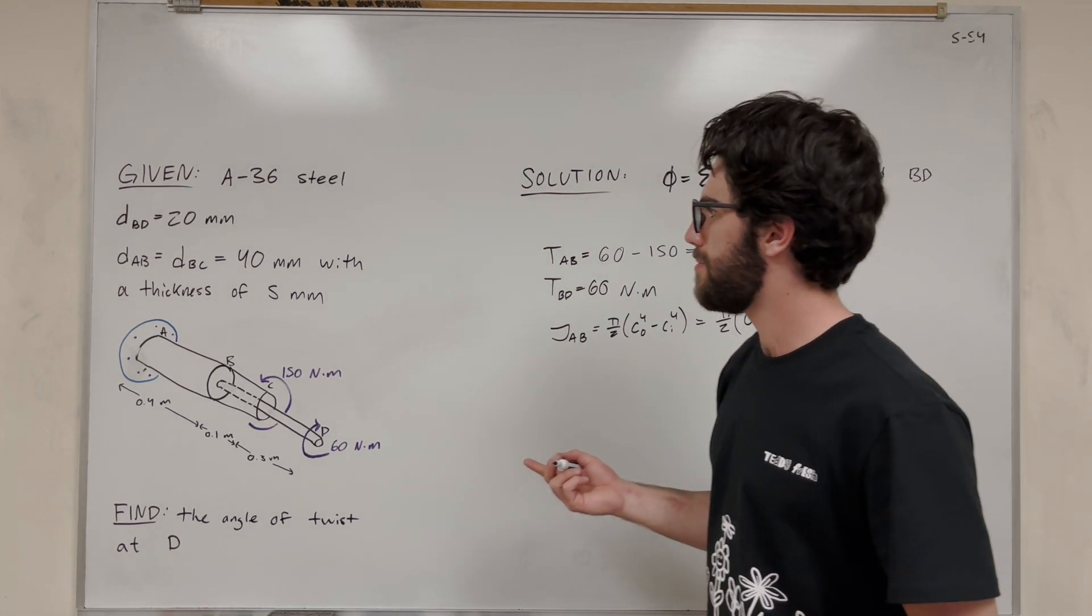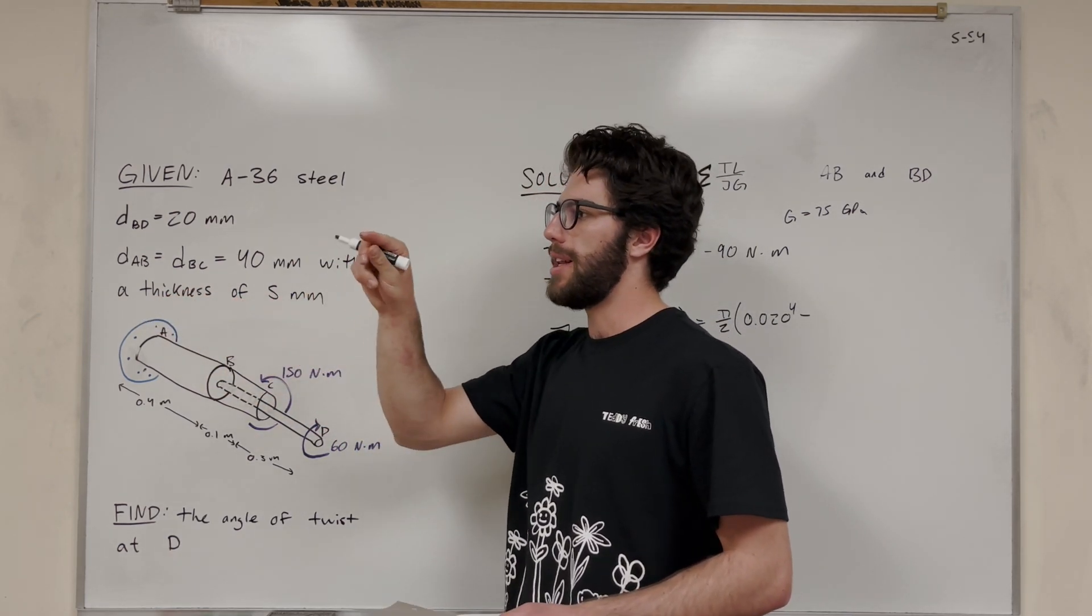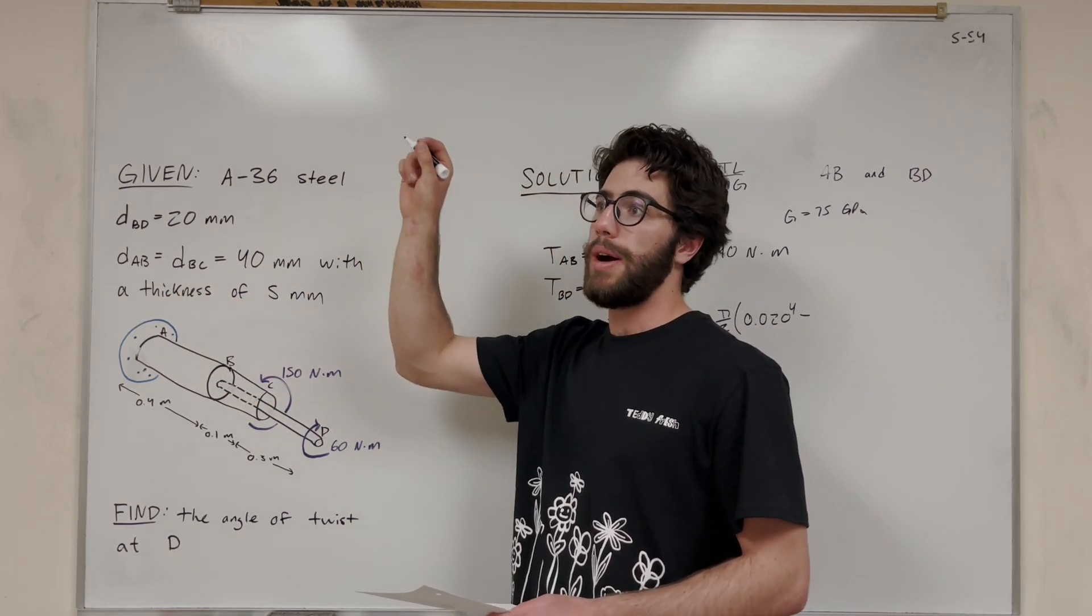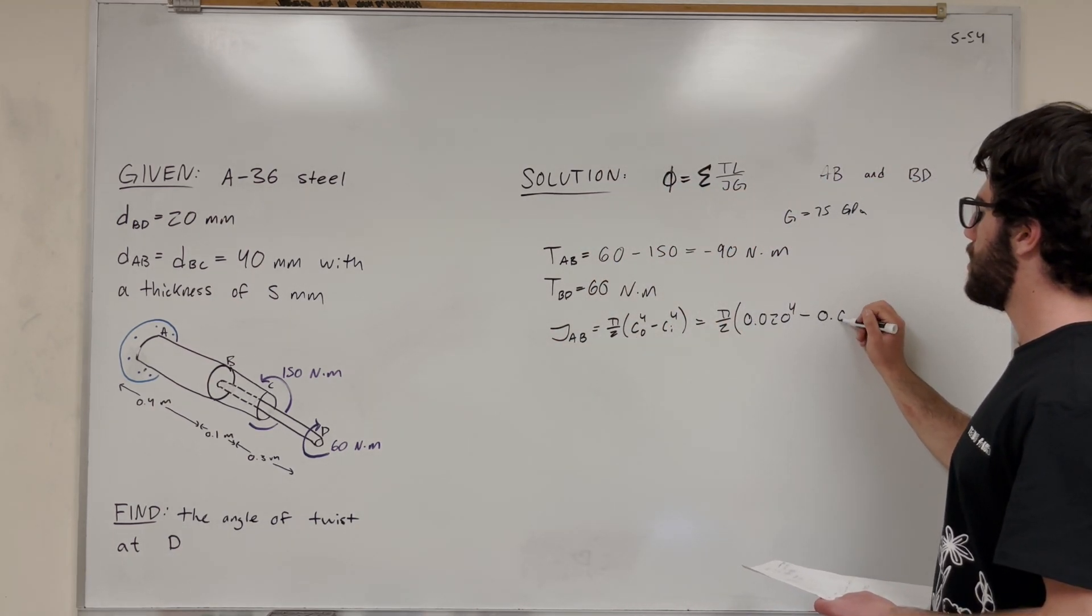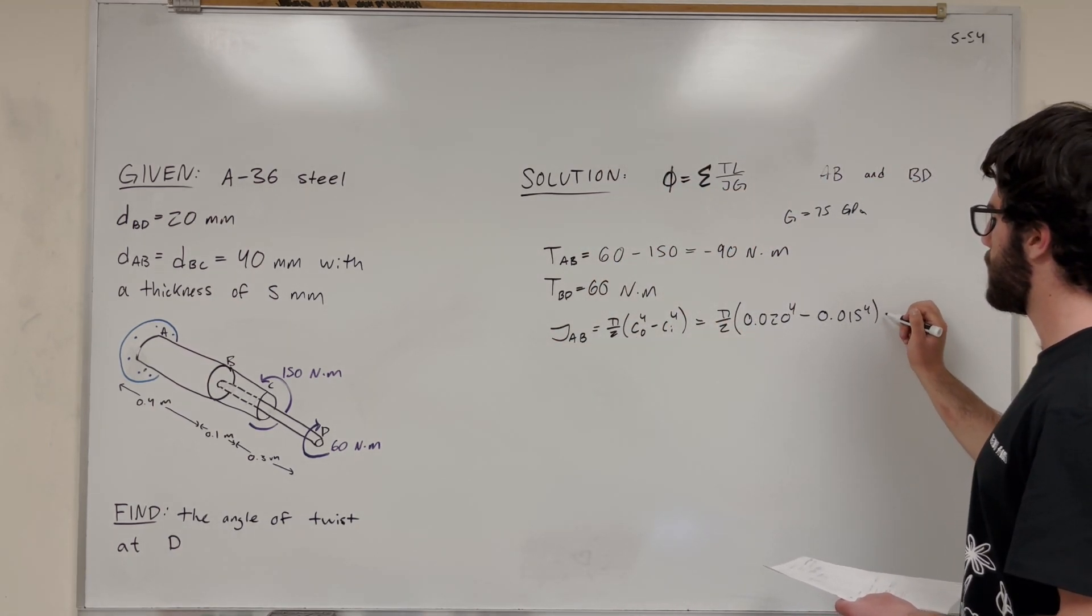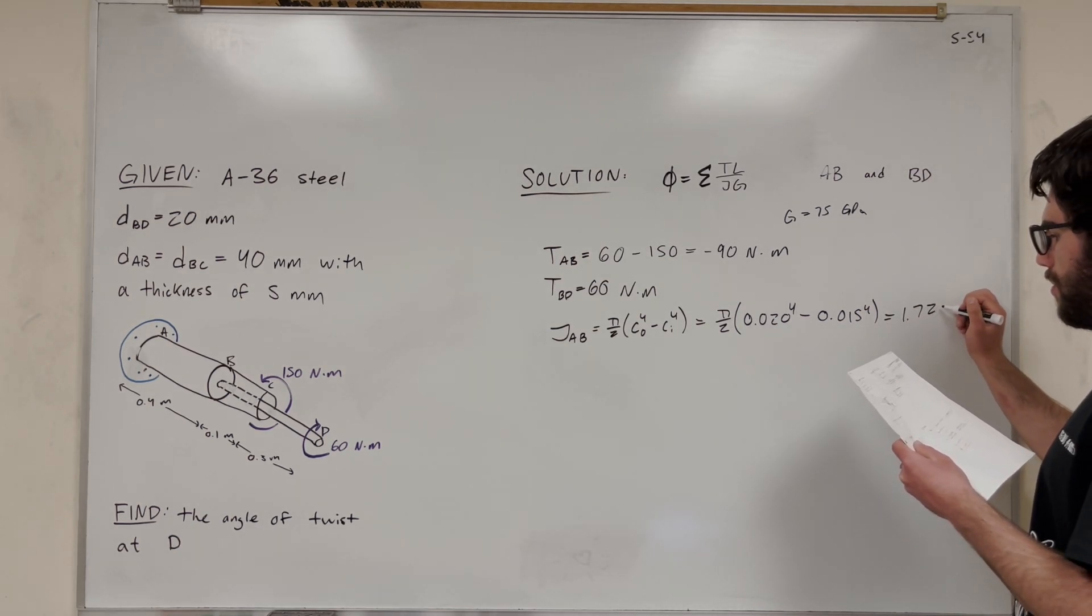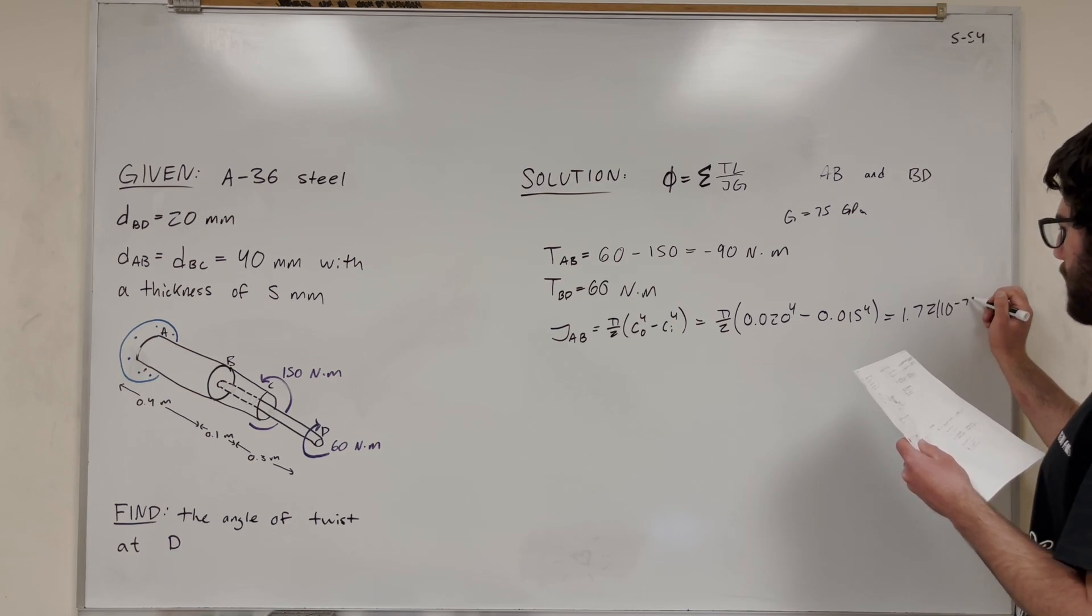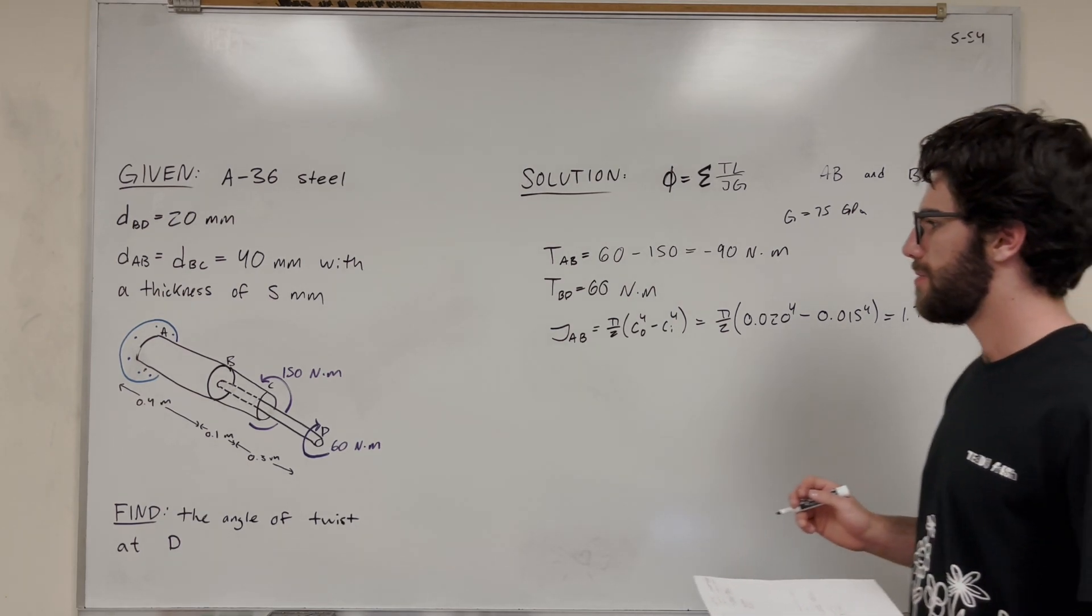Then we have to subtract the inner radius. So we know that the thickness is 5 millimeters, so that means that it's going to be 20 minus 5. It's going to be the inner radius, so 0.015 to the 4th. And then you're going to find out the polar moment of inertia of AB is 1.72 times 10 to the negative 7th. And this is in meters to the 4th.